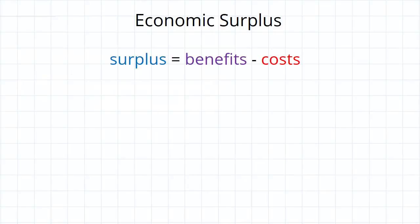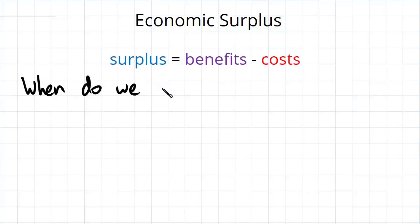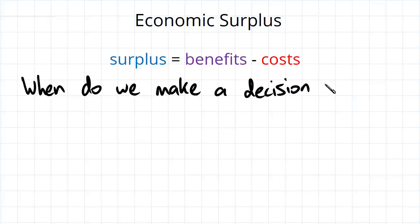Economic surplus is defined as the difference between the benefits of making an economic decision and the cost of making it. The question we have to ask is: when do we make a decision? We answered this in the previous video when we looked at the cost-benefit principle — people are rational and they will make a decision when the benefits outweigh the costs.